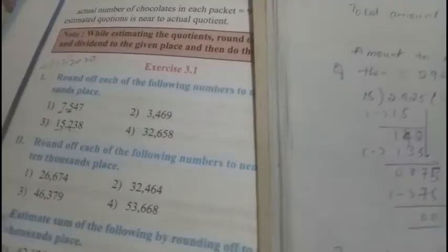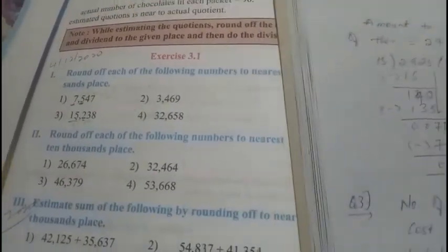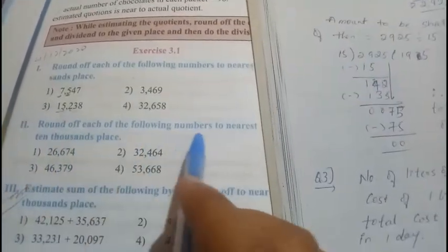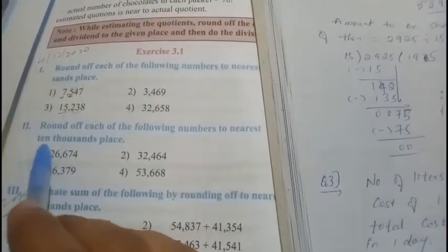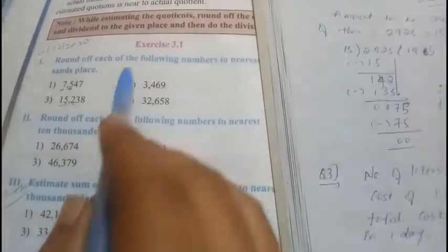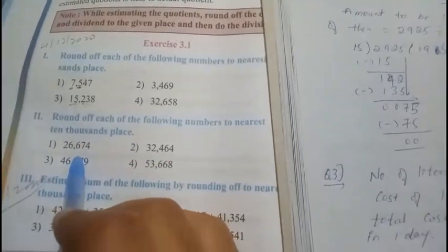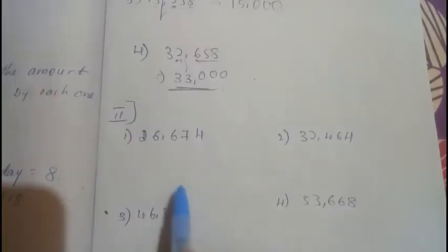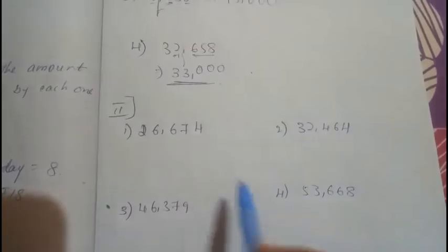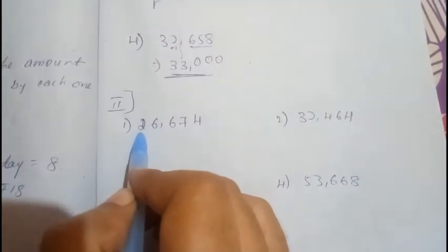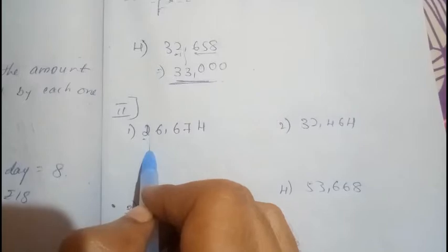Now for question number 2, we have four questions. The instruction says: round off each of the following numbers to the nearest ten thousand place. Here we need to look at the thousands digit instead of the hundreds digit. Mark a line after the ten thousands place.